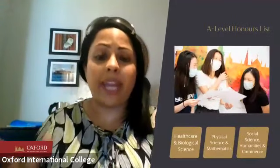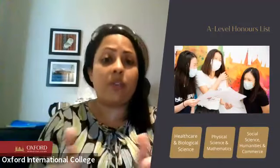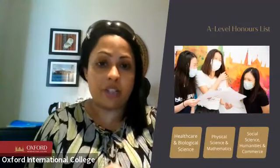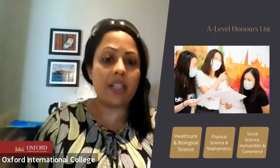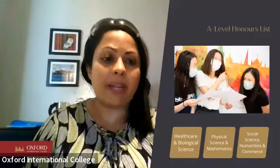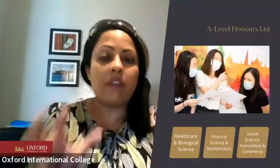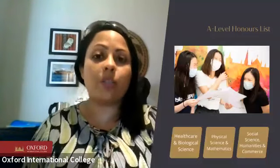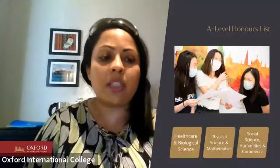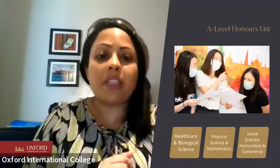So how do you prepare yourself for top university? First, you have to discover your passion. We place students into three career categories: healthcare and biological sciences; physical science and mathematics; and social science, humanities, and commerce. These three groups cover at least 90% of all university courses — not fine art or music, which are very specialist, but almost everything else.